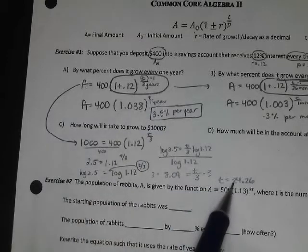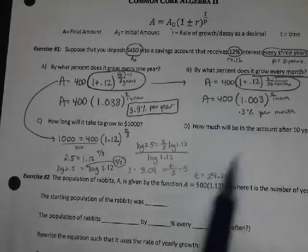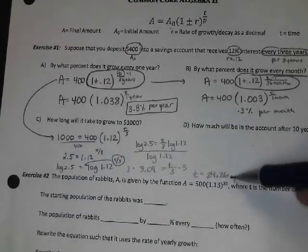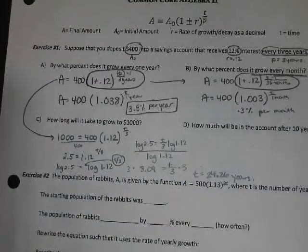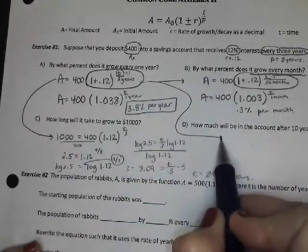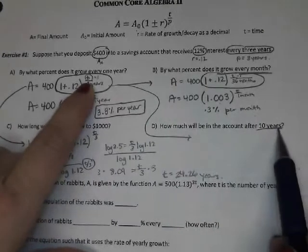And the formula I used was this one with 3 years. So my answer is in years. Had we used this month equation, that answer would have been in months. It would have been equivalent to 24.26 years, but it would have been a certain number of months equivalent to that.